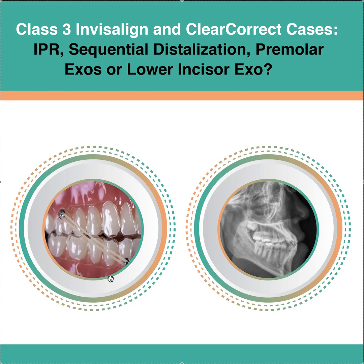I rarely, if ever, add elastics to aligner treatment plans. I've just found it's so different than braces — you just don't need it. I see a lot of you going nuts with the elastics, and I think it's hilarious. It actually causes, in my clinical opinion, way more problems than it's worth, and patients hate it. So why not get rid of them? If it was a severe Class 3 full-step lower premolar case, maybe I would add them — that would be the one situation. But I can tell you, I've seen tons of Class 3 cases and Class 2 cases get fixed without elastics because I'm using sequential distalization. Why use elastics when you don't have to? Hope that helps. Thanks.